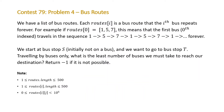The question states we have a list of bus routes. Each route is a bus route that the ith bus repeats forever. For example, if route 0 is equal to 1 5 7, this means that the zeroth indexed bus travels in the sequence 1 5 7 forever. We start at bus stop s, initially not on a bus, and we want to go to bus stop t. The number of routes will be less than 500, the number of stops on each route will be less than 500, and the stop number can be up to 10 to the 6.